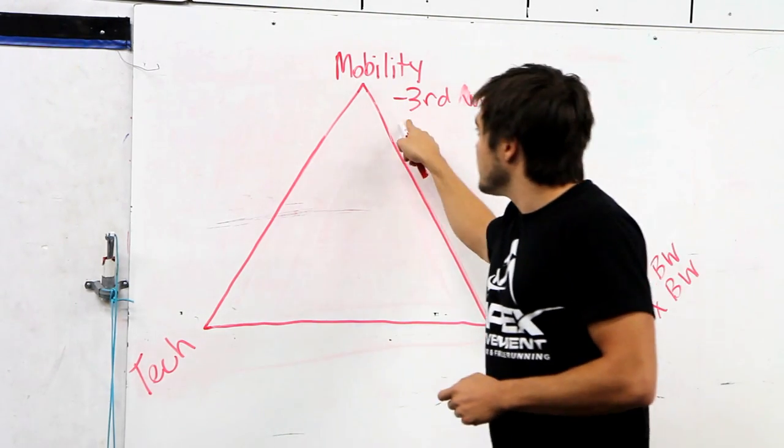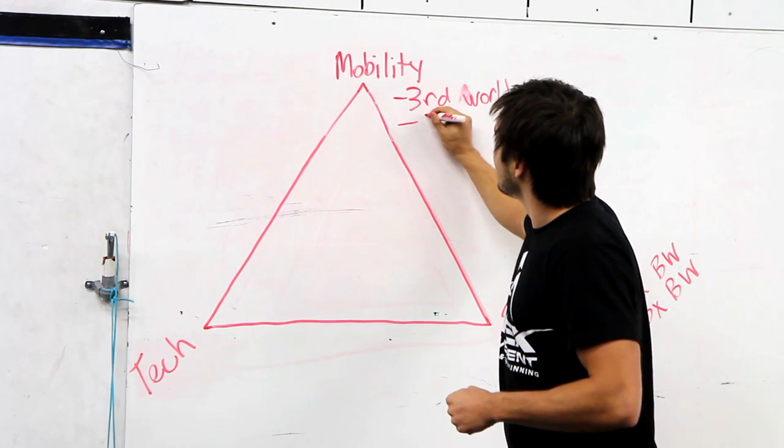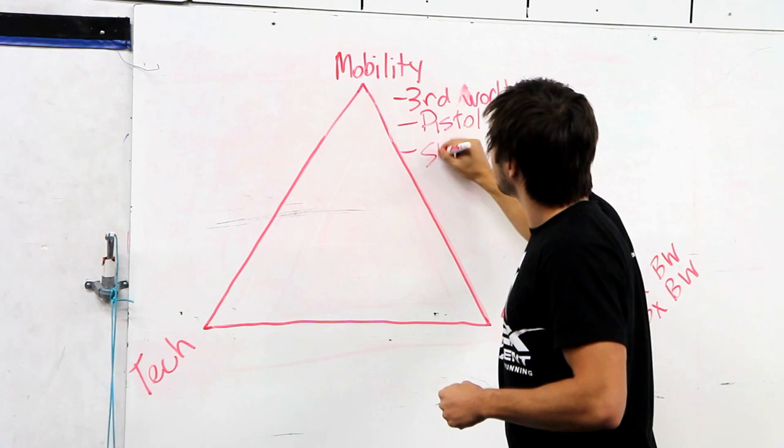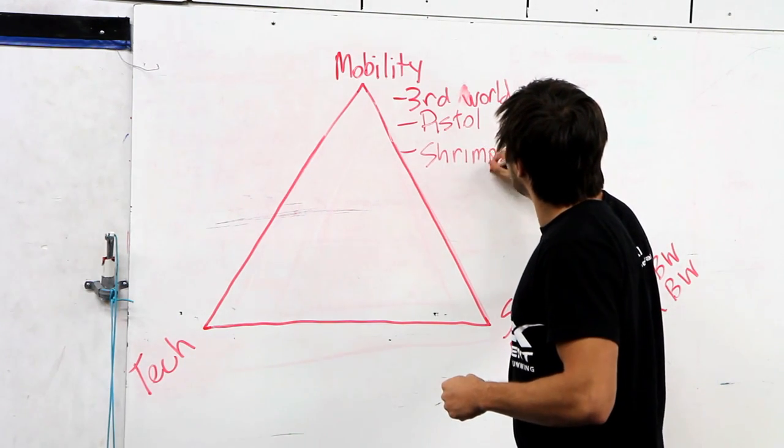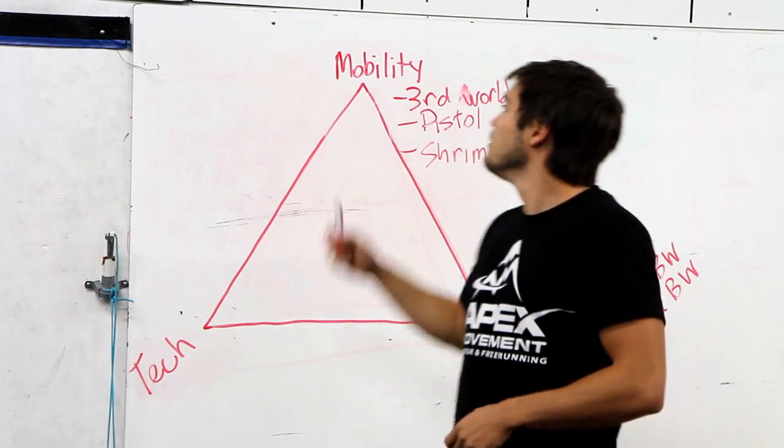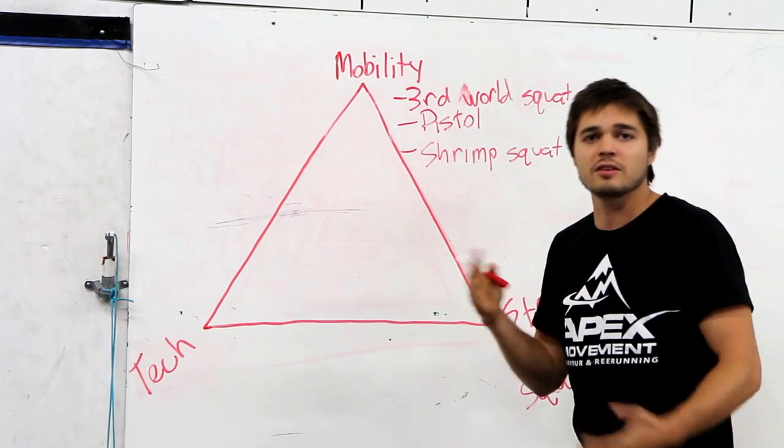Once you've addressed this issue, I would also recommend working on getting a good pistol and a good shrimp squat. These are two great bodyweight leg exercises that also address your flexibility and mobility issues in your ankles and your hips.